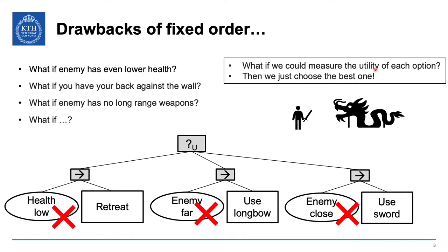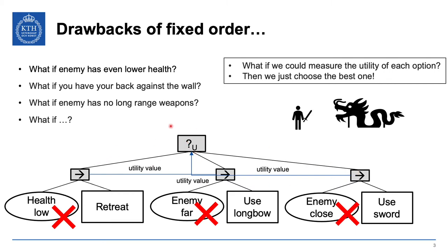Basically, if we can measure utility, we remove the preconditions from these actions. Instead, a utility value is fed back from each subtree, and this becomes a utility fallback node. This node constantly resorts its children based on their utility values, so you always take the most useful action first regardless of the situation. That's a utility fallback.